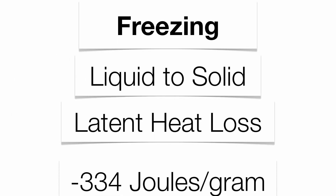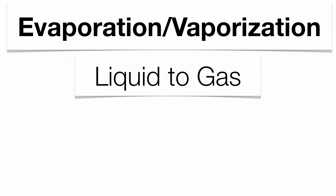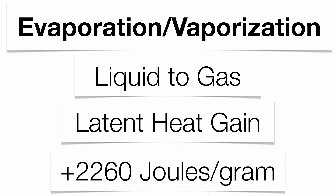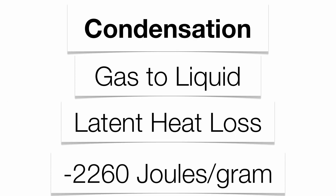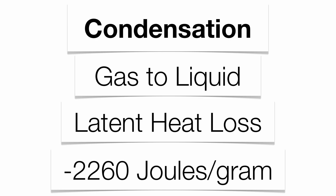Then we go to freezing — liquid to a solid. This is a latent heat loss, giving off 334 joules per gram back into the atmosphere. Next is evaporation or vaporization — liquid to gas. You take liquid water and change it into water vapor. This is a latent heat gain requiring an additional 2,260 joules per gram. Finally, condensation is gas to liquid — cooling the gas back into a liquid — a latent heat loss at 2,260 joules per gram.